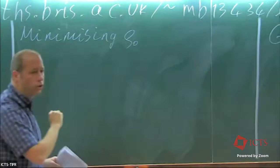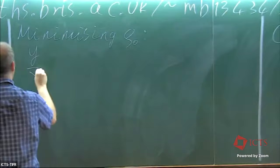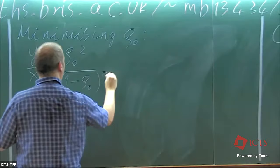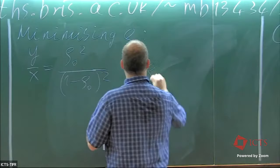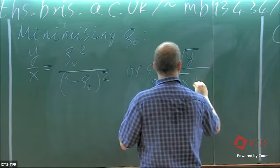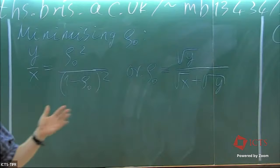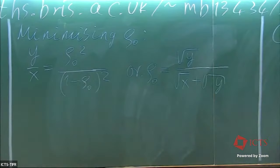The minimizing rho, which I'll call rho_0, satisfies: y over x equals (rho_0)^2 over (1 minus rho_0)^2. You can solve this: rho_0 equals sqrt(y) over (sqrt(x) + sqrt(y)). This is just some intuition of what could possibly go on. If you set rho to this value for a given direction, it minimizes the boundary contribution and makes the path exit closest to the corner.